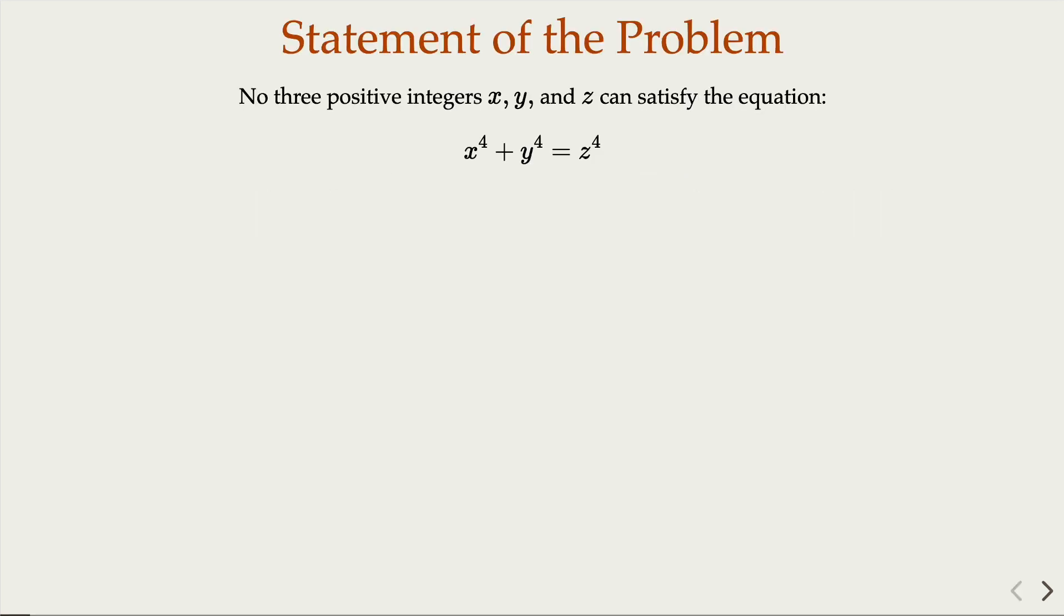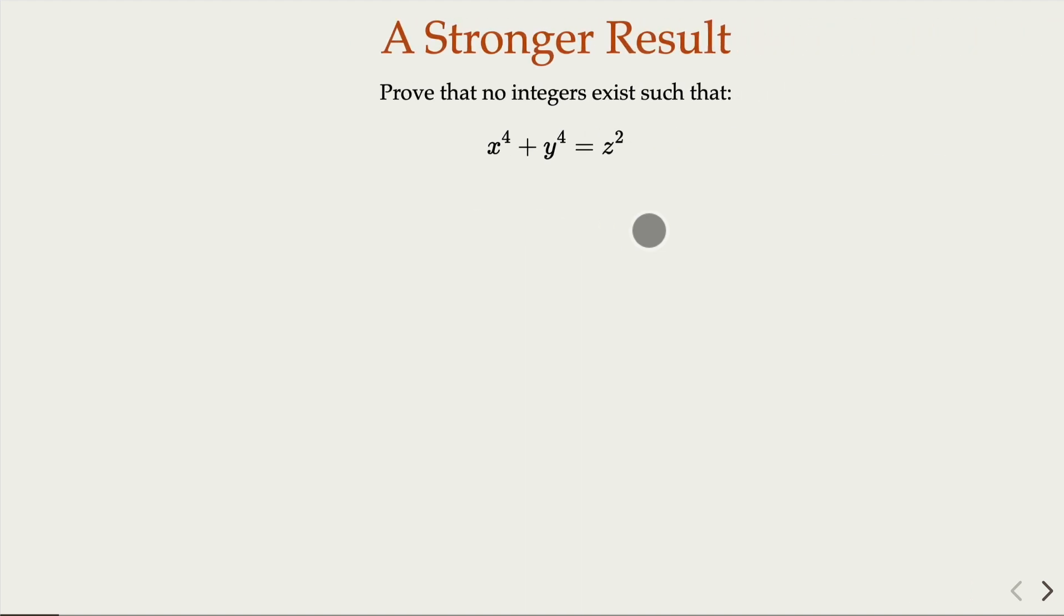Now the statement is that there are no positive integers x, y, z, such that x to the 4th plus y to the 4th equals z to the 4th. However, we can prove an even stronger statement for this equation where z here is squared. This is a stronger statement. We can prove that using the method of infinite descent.